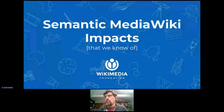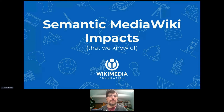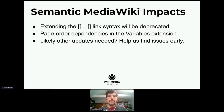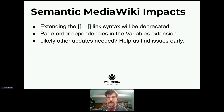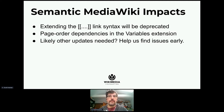So what are the impacts we know of to Semantic MediaWiki? Two that we know of already: first, extending the square bracket link syntax, which was a hook added specifically for Semantic MediaWiki way back in 2007, and which nobody else has used — we'd like to deprecate that. The other is that there are page order dependencies in the Variables extension that we've talked about at some length. There are probably others, and I'm hoping we'll have ten minutes at the end for you to tell us more that we should be paying attention to.